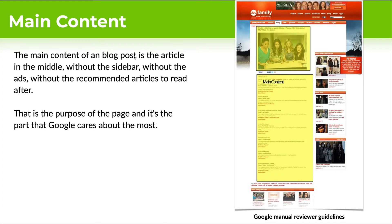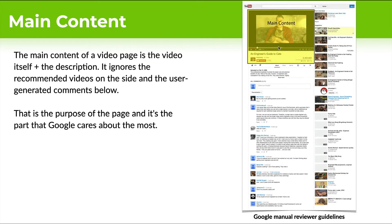For an article like a blog post, the main content is fairly obvious — it's going to be the image at the top, the header, the main content body. But it is not the sidebar, it is not the site header, it is not the navigational recommended articles at the bottom. For a video like a YouTube video, it's going to be the video and the top part. I'm not sure if they've changed it since then to include the description, but this is straight from the manual reviewer guidelines — straight from Google in terms of main content.